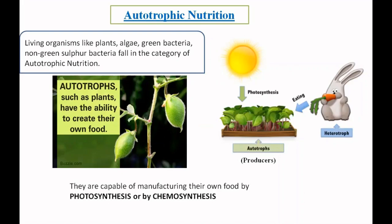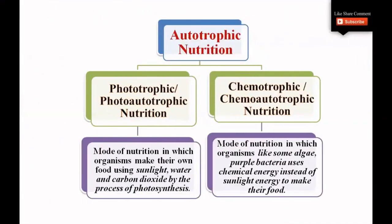The autotrophic mode of nutrition is further divided into two categories: phototrophic nutrition and chemotrophic nutrition. The organisms which follow phototrophic nutrition are known as photo-autotrophs, and the organisms that follow chemotrophic mode of nutrition are known as chemo-autotrophs. So here we begin with the two categories — phototrophic nutrition, also known as photo-autotrophic nutrition, and chemotrophic, also known as chemo-autotrophic nutrition.